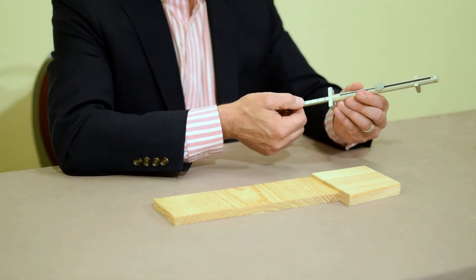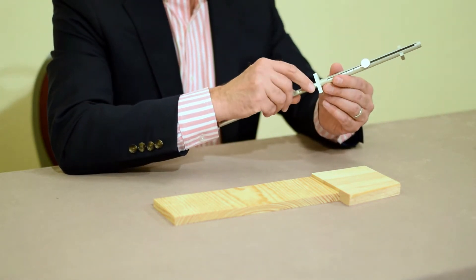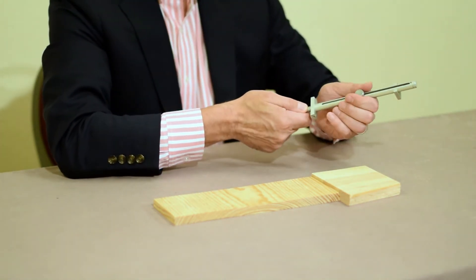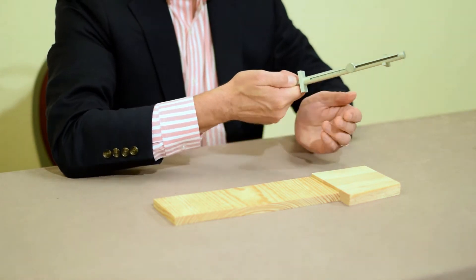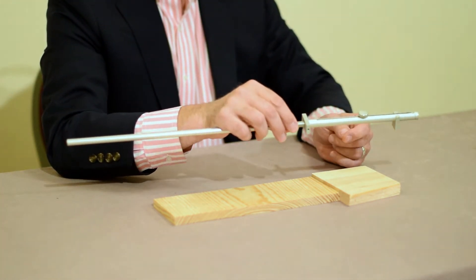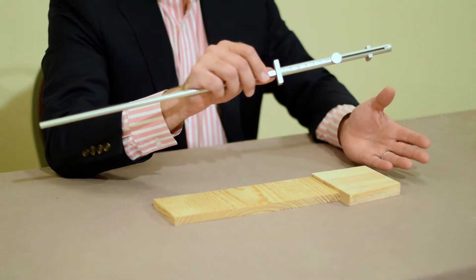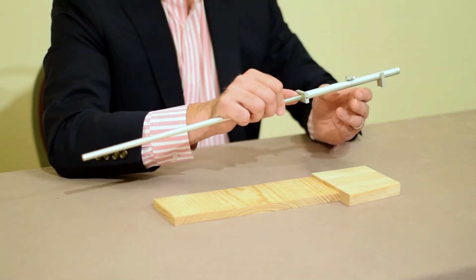So, we go 12 and a half, 13, 13 and a half, 14, 14 and a half, 15 and some mystery clicks. So, 15, 1, 2, 3, 4. 4 16ths, 15 and 4 16ths. 4 16ths can be reduced to 1 quarter. So, it's 15 and a quarter of an inch.